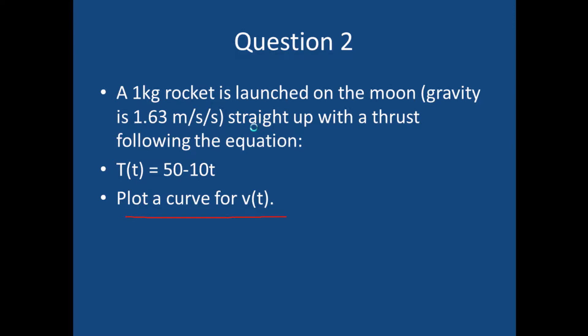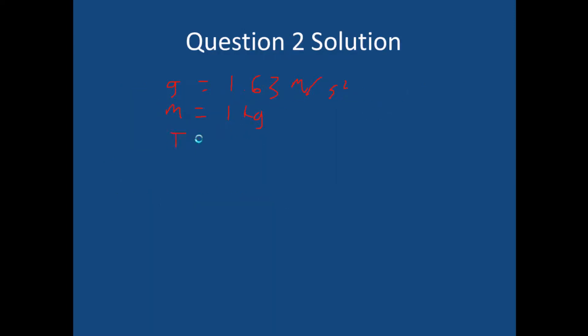Okay so what was g, it was like 1.63 or something. What else do we know? We know the mass of the rocket is 1 kilogram. What else do we know? Oh yes we know the thrust. Thrust is equal to 50 minus 10 t. This is a function of time. Okay so what's v of t?